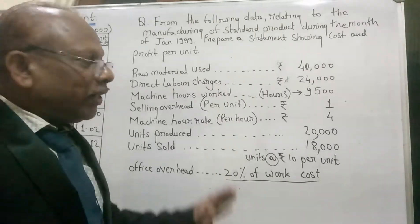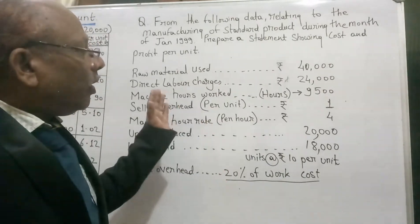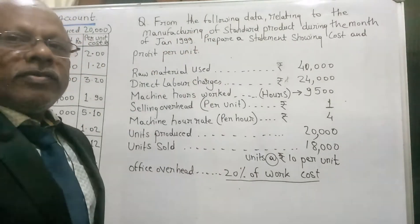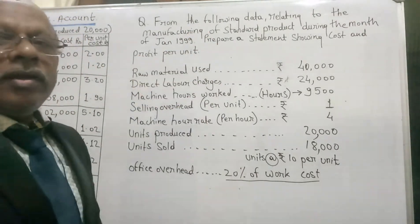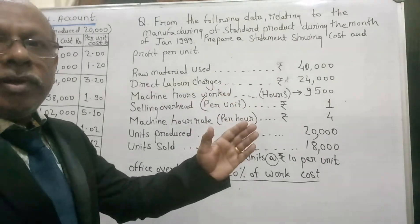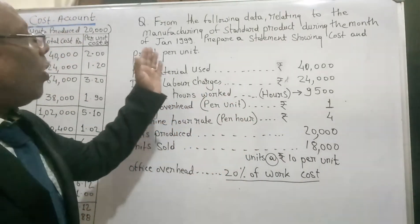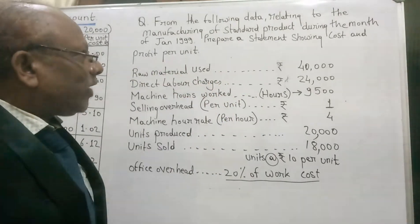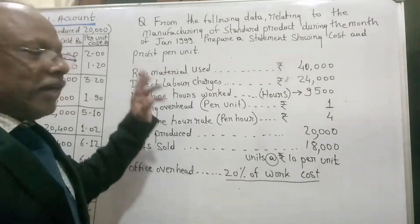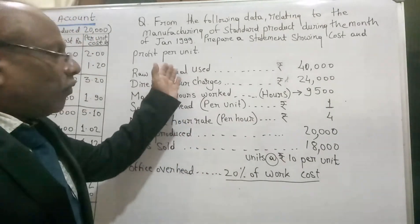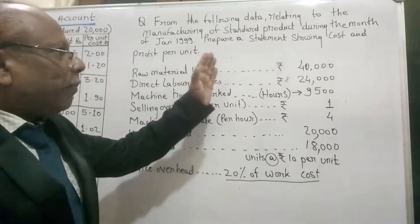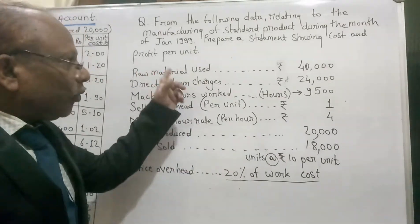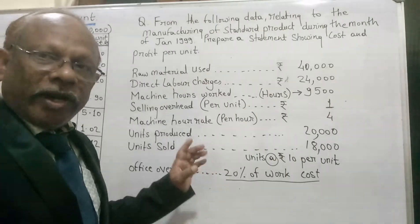I have given a problem so that you will have a good understanding of how to solve problems. The question is written on the board: from the following data relating to the manufacturing of a standard product during the month of January 1999, prepare a statement showing cost and profit per unit.